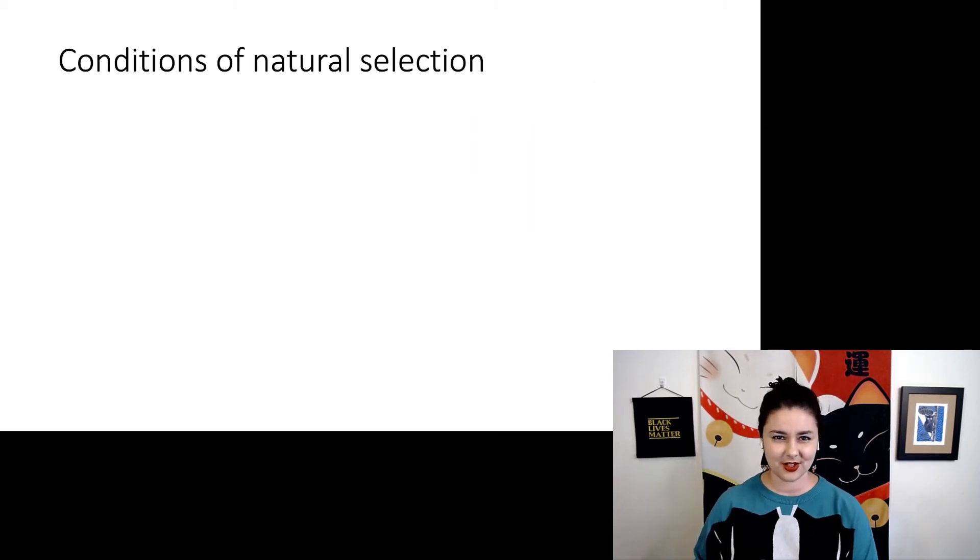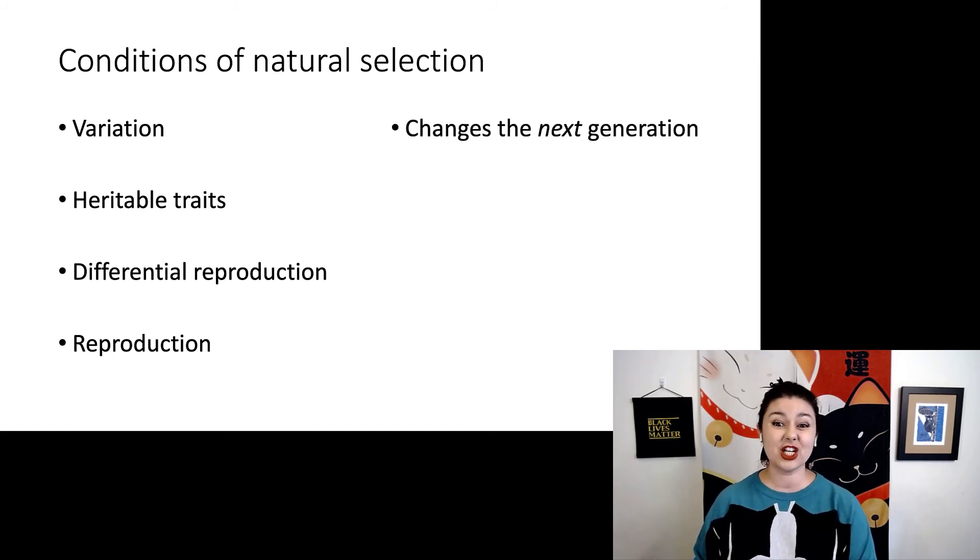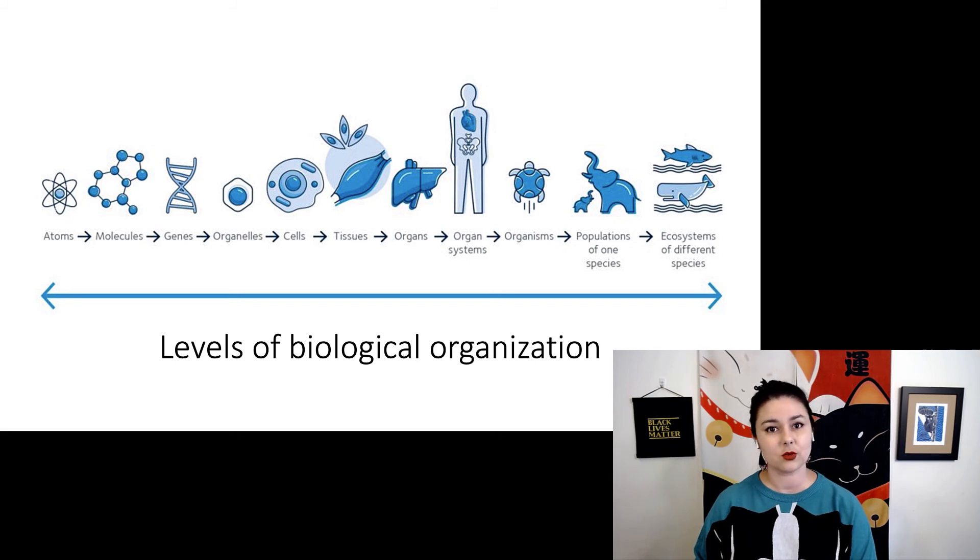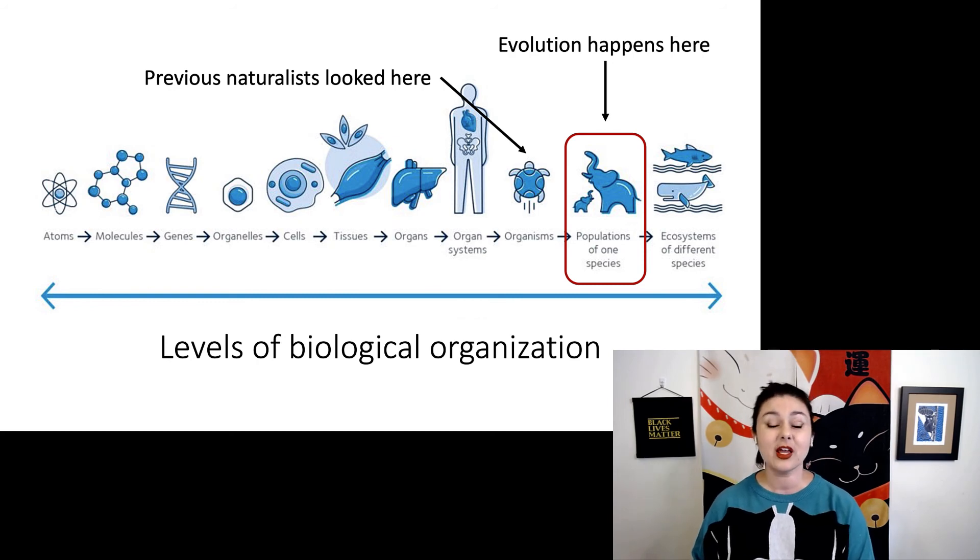So let's go over these conditions of natural selection again. First, we have that variation. Second, that variation is heritable. Now we have this differential reproduction. And of course, we have one generation of reproduction. So again, variation changes the next generation. It happens to a population and not an individual. That's the important part. Let's go back to our levels of biological organization. This is one of the reasons why it's important to understand these. Evolution happens at the level of the population. The problem was, before Darwin came along, people were actually looking at the level of the individual. And this is the reason why it took people so long to figure out what was happening, because we were looking at the wrong level of organization.